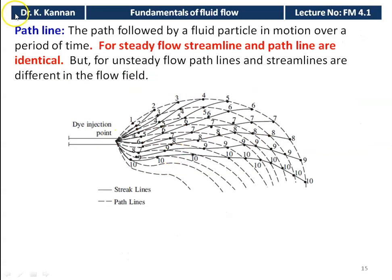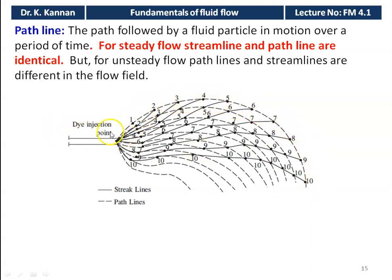The path line is the path followed by a fluid particle in motion over a period of time. For steady flow, the streamline and the path line are identical. For unsteady flow, the path line and the streamline are different in the flow field. In the diagram, the dotted lines numbered 1 through 10 represent the path lines traced by fluid particles injected with dye.